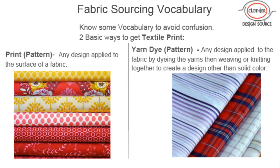A couple more words: textile prints. There are two different ways to get print in your fabric. You can print the pattern to the surface of the fabric — if you turn the fabric over and look on the back side, there's nothing on it, it's more white. So these are printed patterns applied to the surface. On the right-hand side, these are called yarn dye patterns — the yarns used to make the fabric were dyed white and various colors of purple, and then those yarns were woven together to make that stripe. That's a yarn dye pattern.